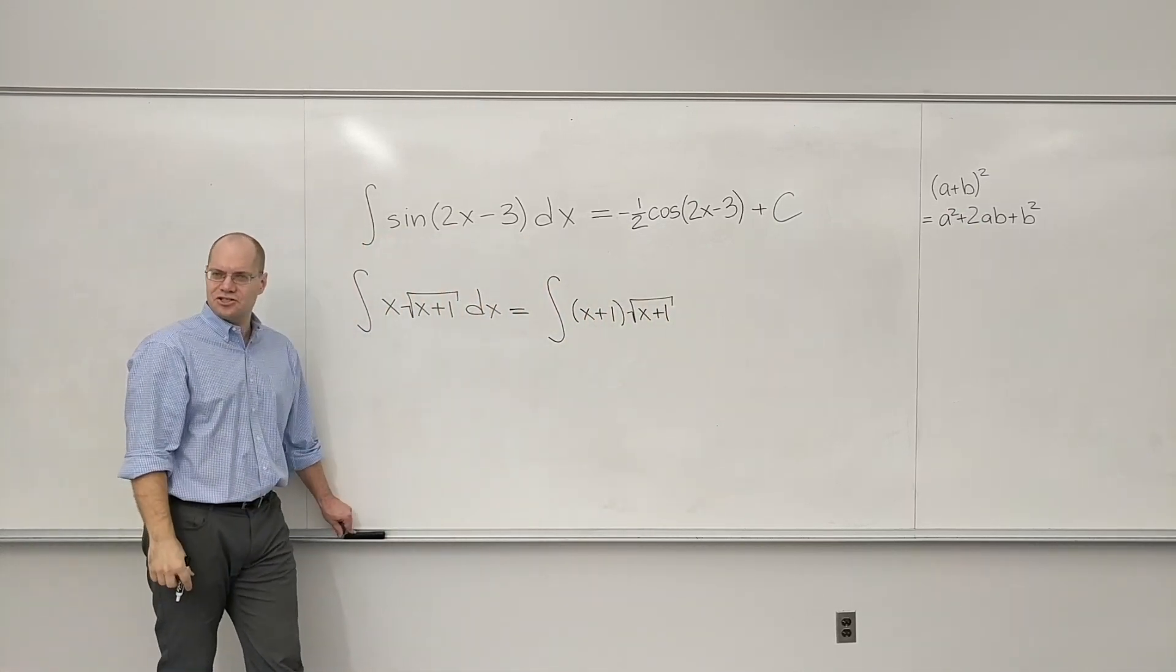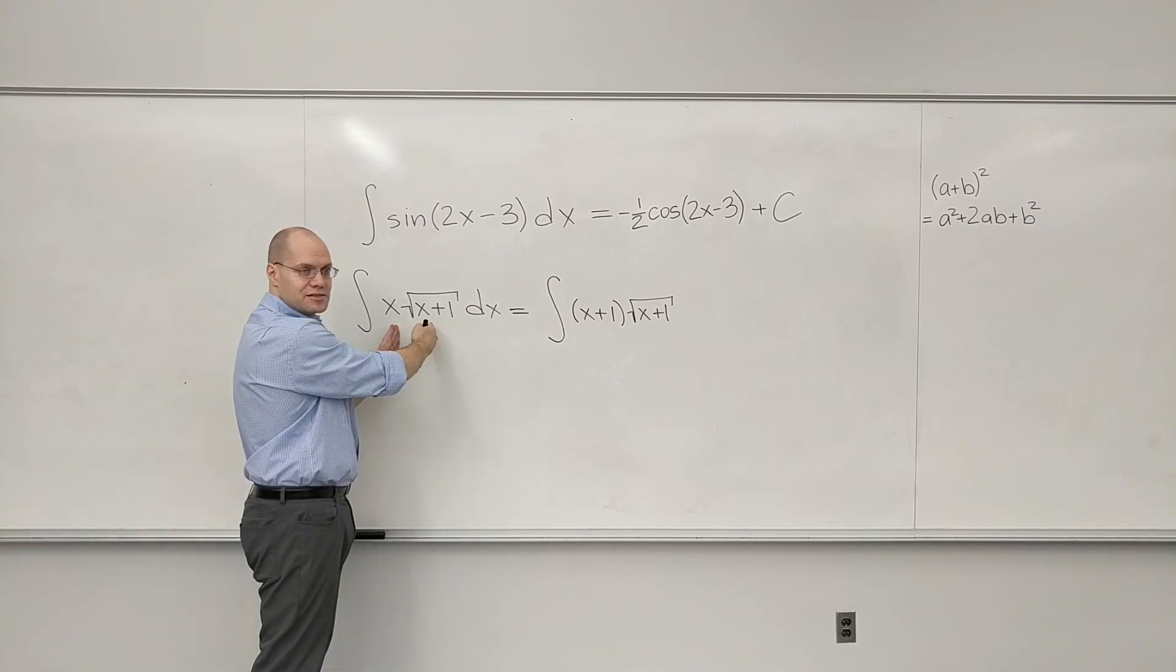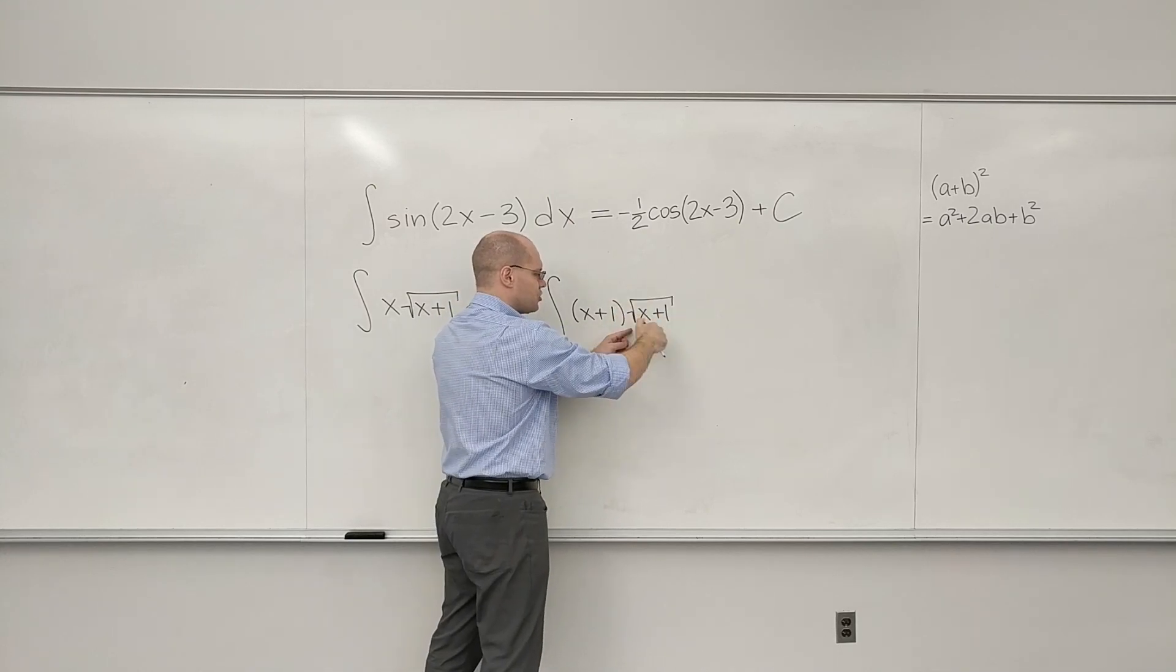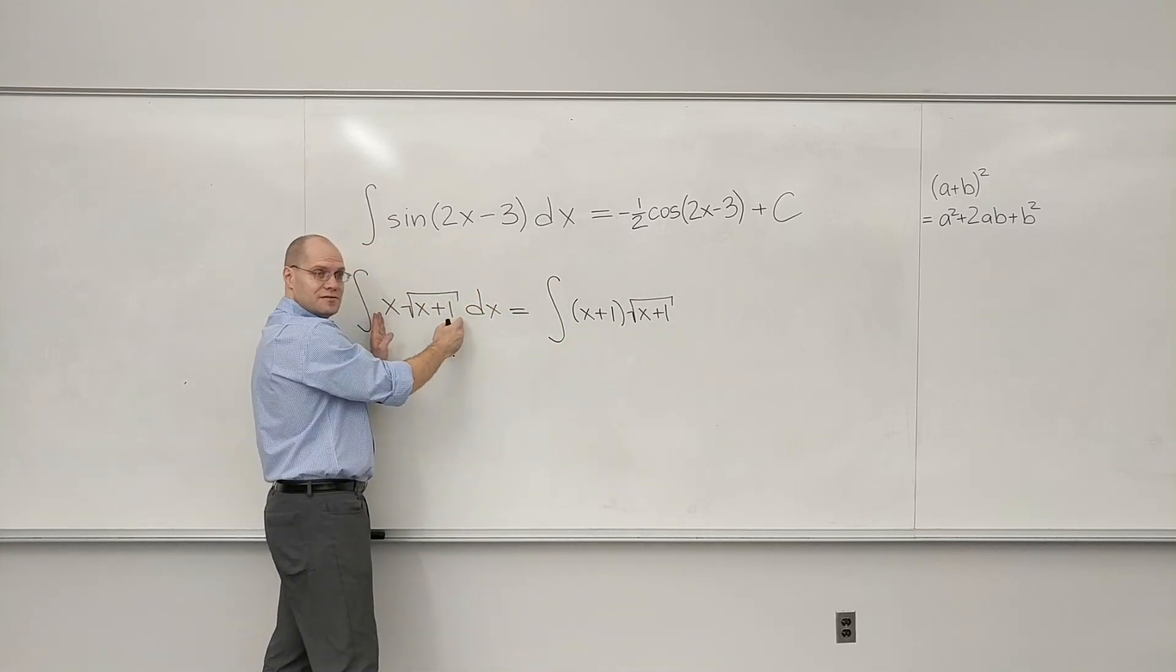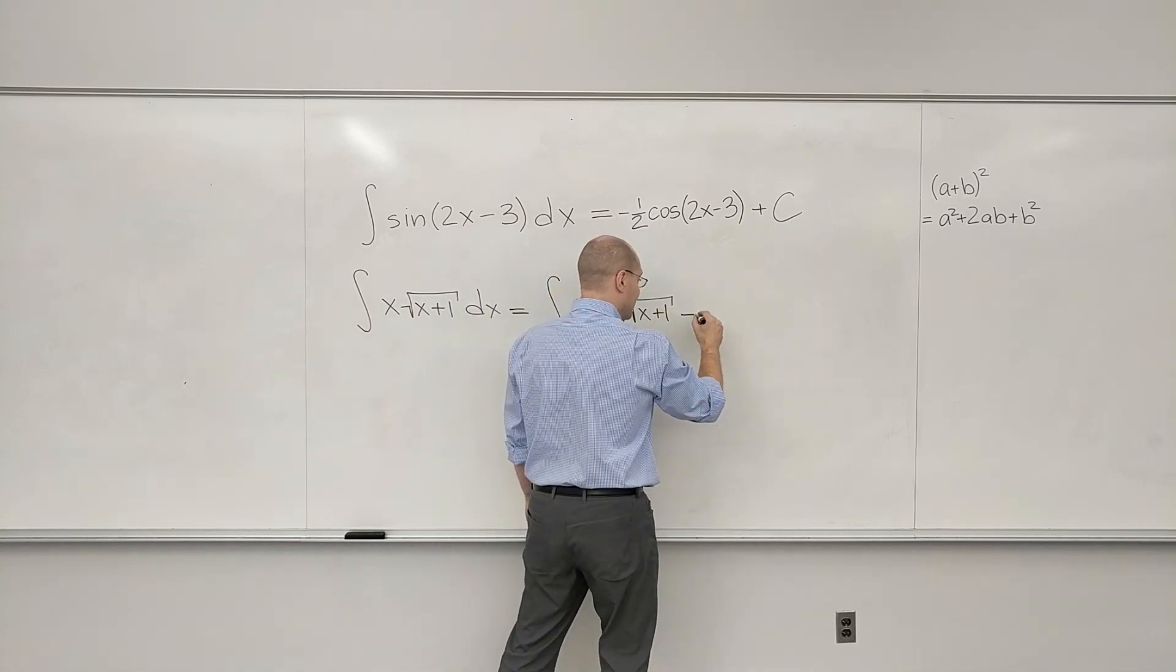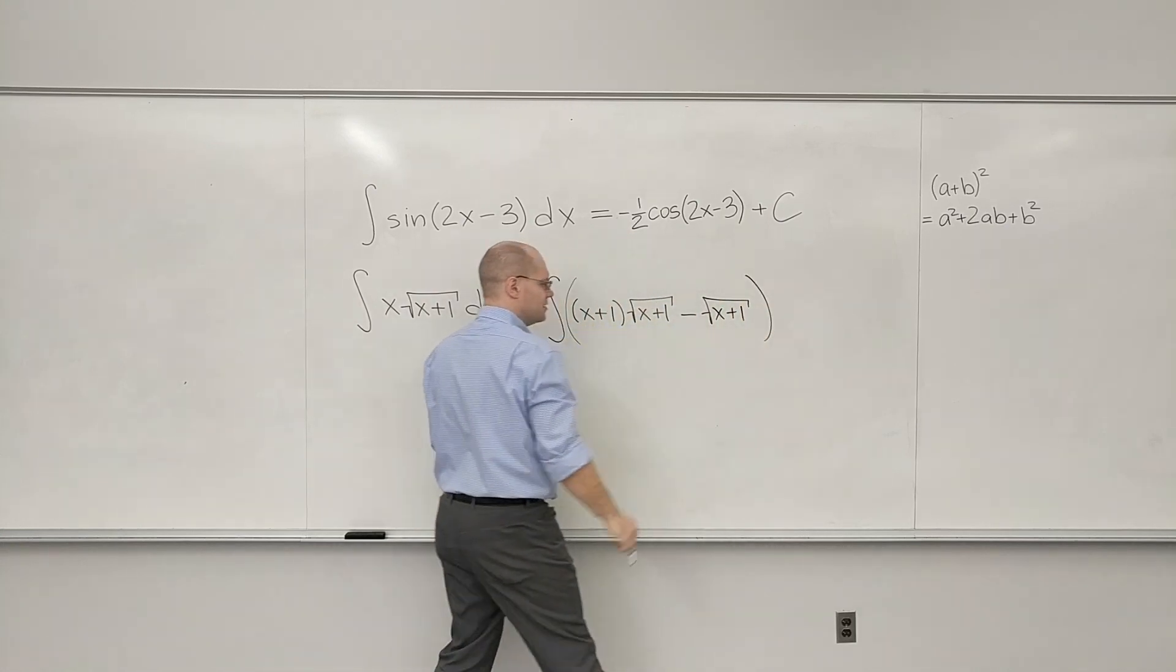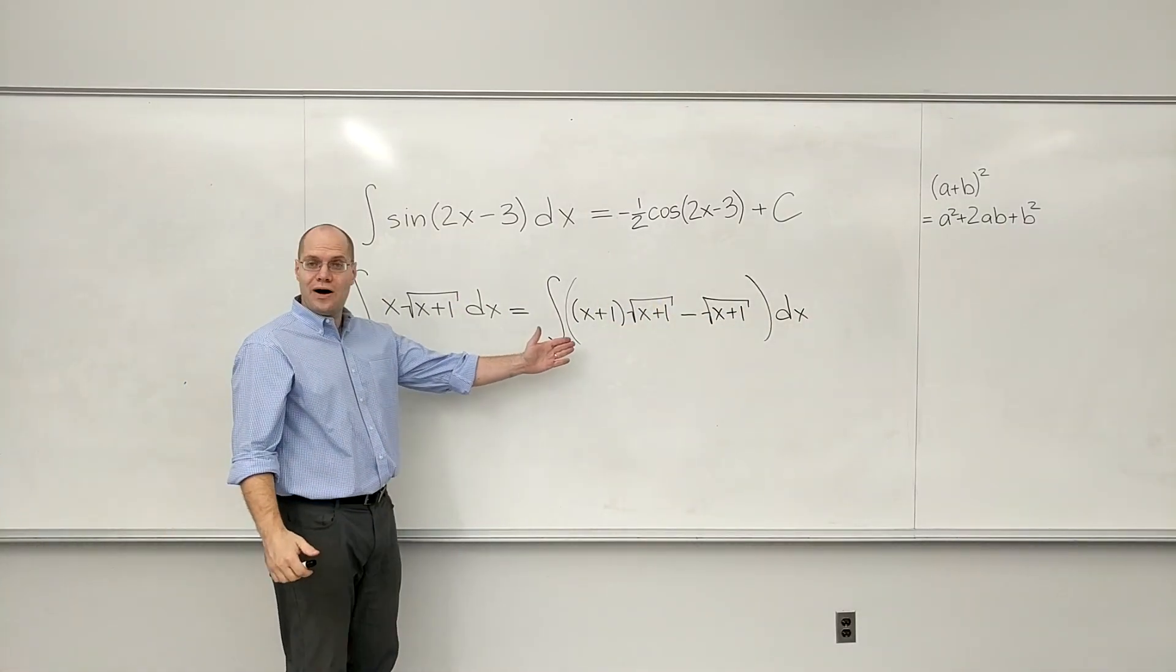Now I have something I can integrate rather easily. But that's not equivalent to this. Because I essentially, when I really look at this, by the distributive law, what I've done was throw in an extra term like this. Because if I were to multiply this out, I would have this plus this guy. So to make up for what I've done, I have to subtract x plus 1. And now the expression that I have is equivalent to what I started out with.